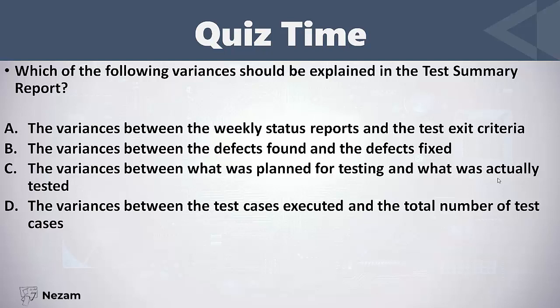Variances are the differences between planned and actual in the test summary report. I need to know the variance or difference between the planned testing and the actual testing — the planned progress and the actual progress — which means the variances between what was planned for testing and what was actually tested.